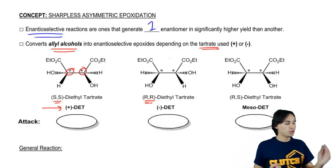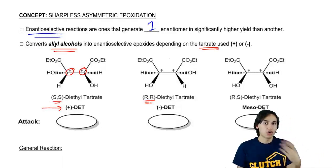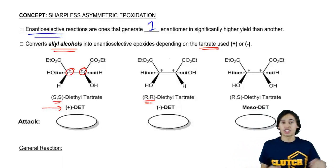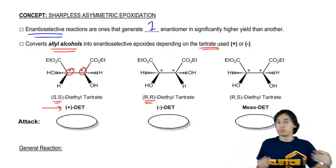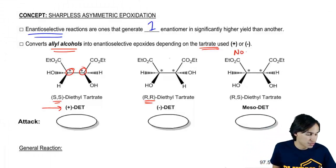And then finally, we have an R and an S or an S and an R. This is actually a meso-DET. So this one would be actually, since it's meso, this one would have no optical activity.